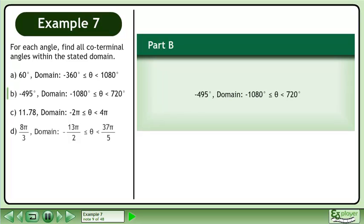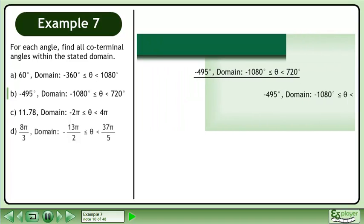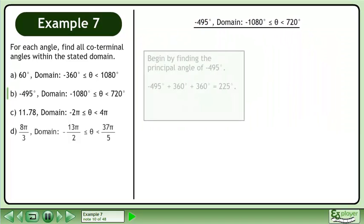In Part B, find the coterminal angles of negative 495 degrees between negative 1080 degrees and 720 degrees. Begin by finding the principal angle of negative 495 degrees — rotate twice counterclockwise to get the principal angle of 225 degrees.